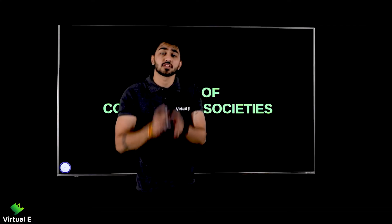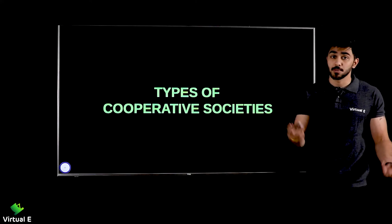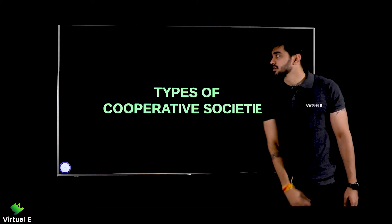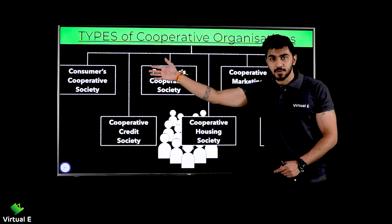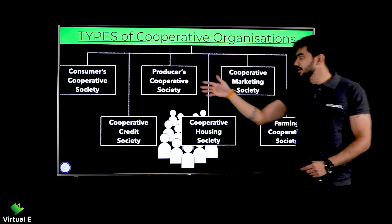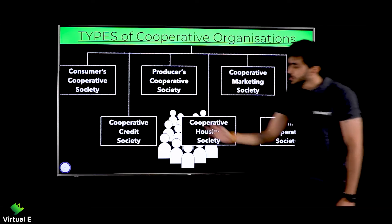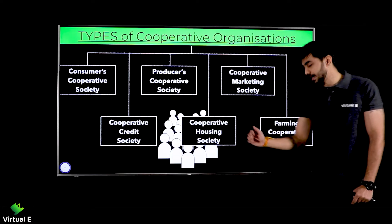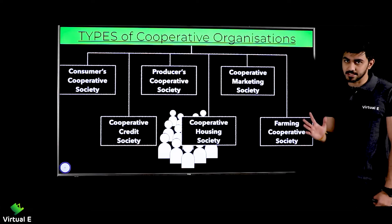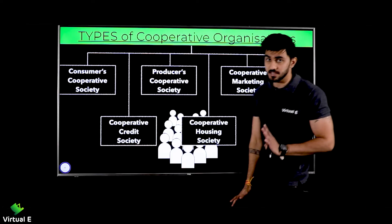Now let's talk about the different types of cooperative organizations. In total there are six types: consumer cooperative society, producer cooperative society, cooperative marketing society, cooperative credit society, cooperative housing society, and farming cooperative society. Let's talk about each one, but first let's clear the basics.